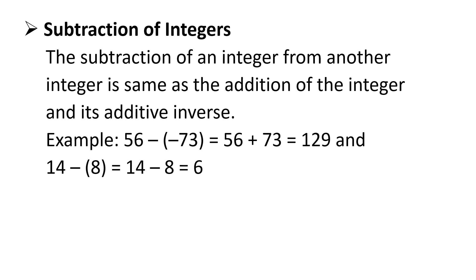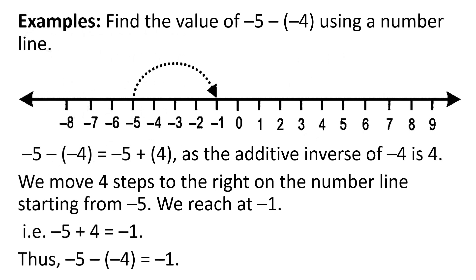Subtraction of integers: the subtraction of an integer from another integer is the same as the addition of the integer and its additive inverse. For example, 56 minus minus 3 is equal to 56 plus 3 is equal to 59, and 14 minus 8 is equal to 6. Now, students, we will solve some examples.